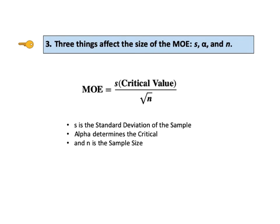Key number three says there are three things that affect the size of the margin of error. This can readily be seen in the formula for calculating the margin of error. MOE, the margin of error, is equal to S, which is the standard error of the sample, times the critical value, divided by the square root of N, which is the sample size.